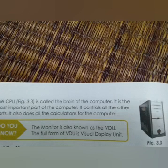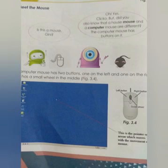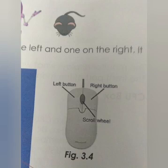Now let's see the mouse. A computer mouse has two buttons — one on the left and one on the right. It also has a small wheel in the middle. You can see the picture in figure 3.4, showing the left button, the right button, and the small wheel in the center.